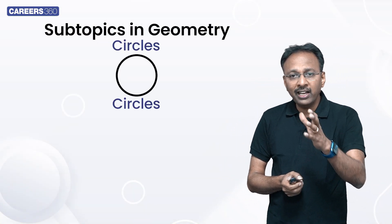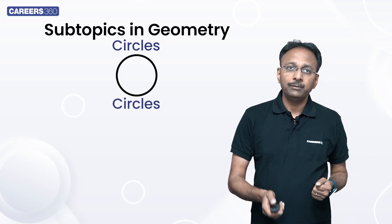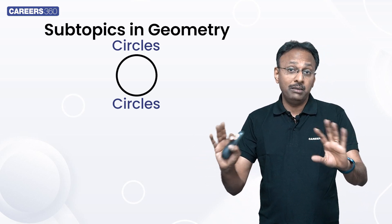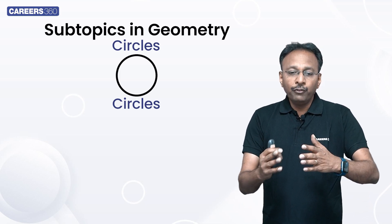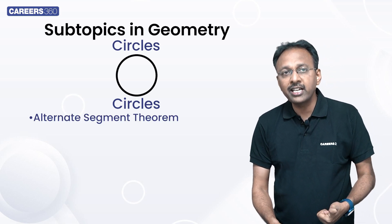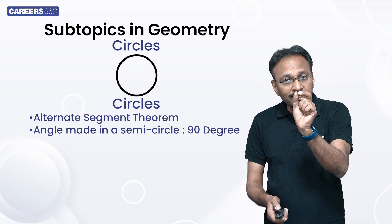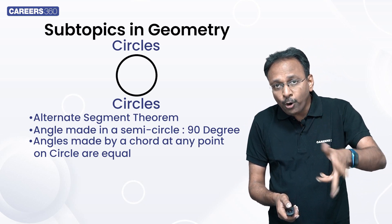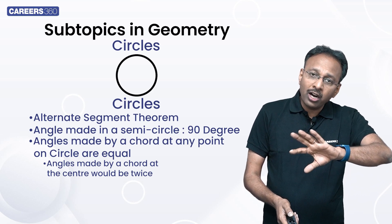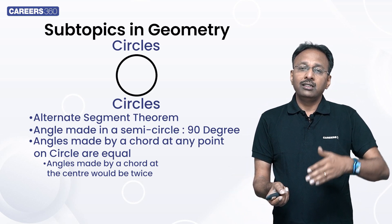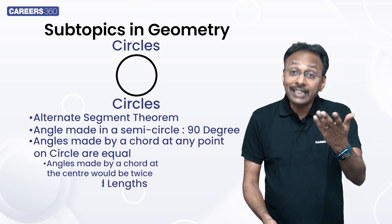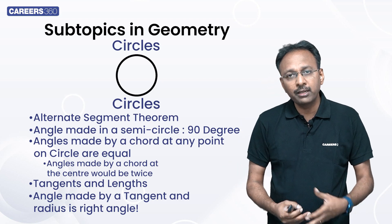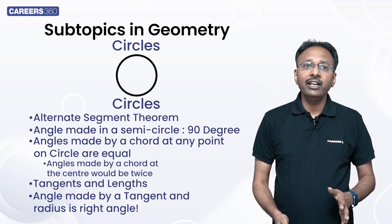The last subtopic in geometry is circles — a very, very important part of your prep. Certain theorems: if you're good at them, go through them; if not and you have very little time, you may want to avoid them — but if you already know them, revise. Key concepts include: alternate segment theorem, angles made in a semicircle are 90 degrees, angles made by a chord at any point on the circle are equal, angles made by a chord at the center are twice those on the other side, and the angle made by a tangent and radius is a right angle.